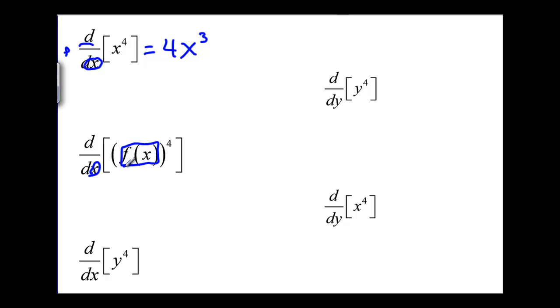This is a chain rule with an outside function up to the fourth power and an inside function of f of x. Even though we don't know what f of x is, we can apply the chain rule here. We get 4[f(x)]^3 times f'(x).